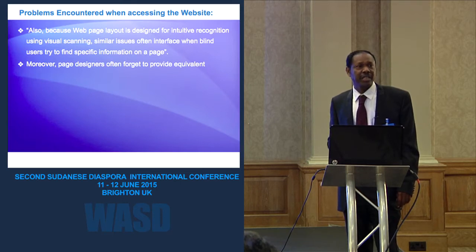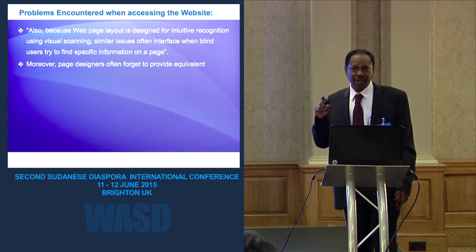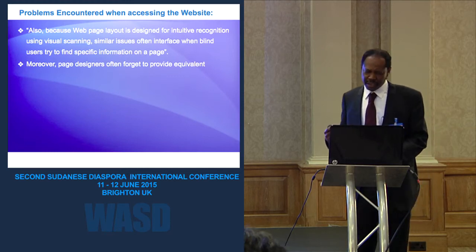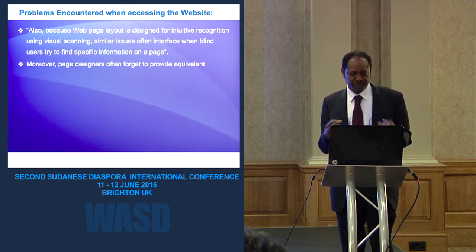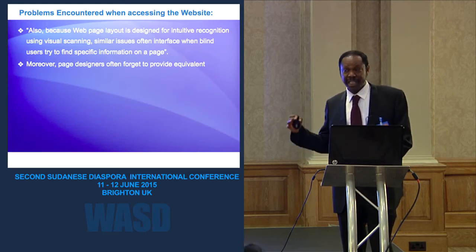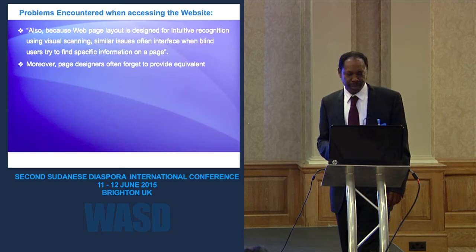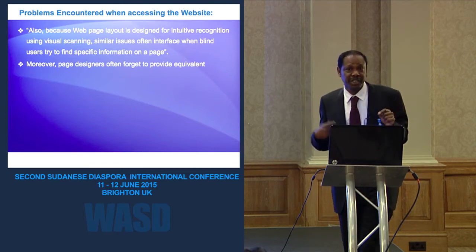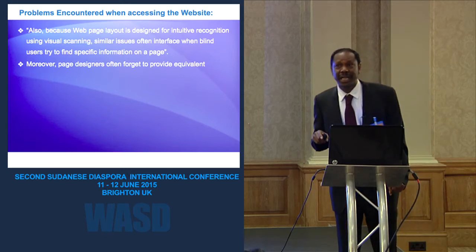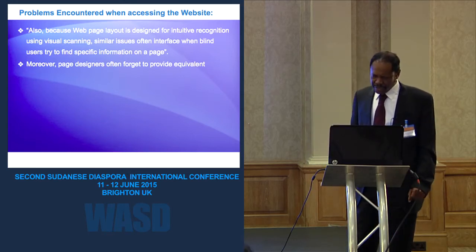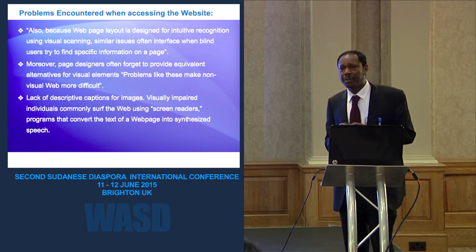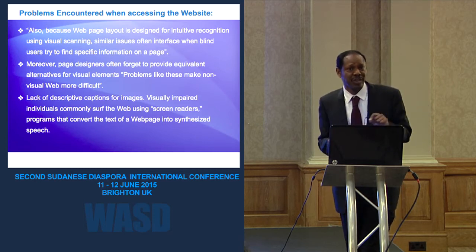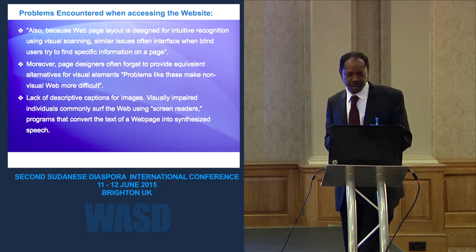Moreover, designers and developers often forget to include equivalent software or alternative descriptions for visually impaired users, making the non-visual web more difficult. They do not follow accessibility tools and guidelines, and do not make websites accessible for all. A huge problem is the lack of description or caption for images — when there are no tags or captions to describe what image is contained within the website.